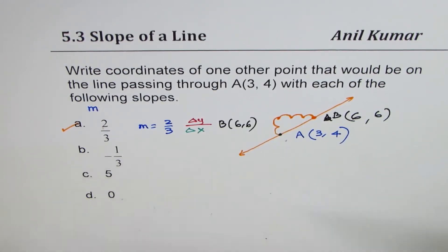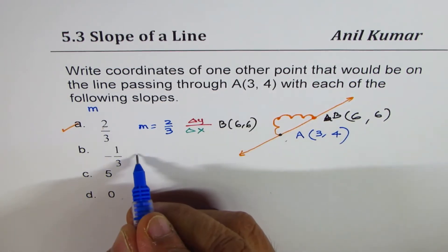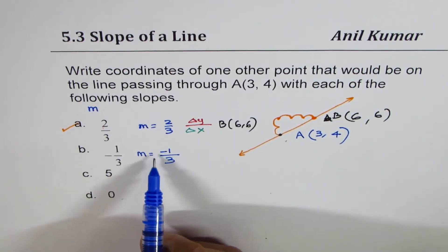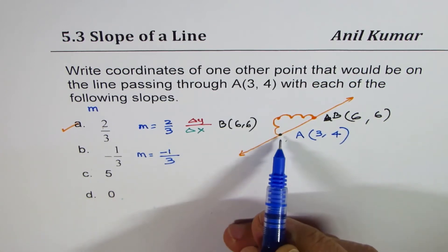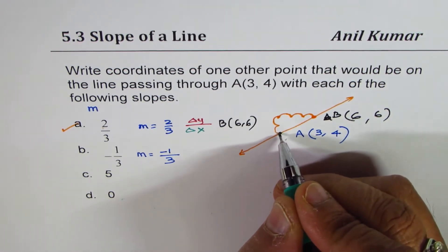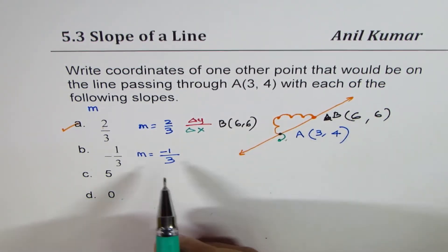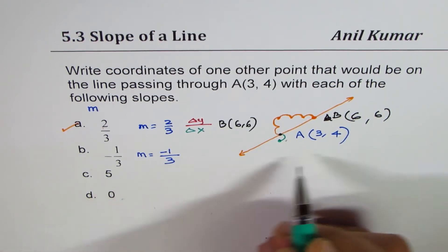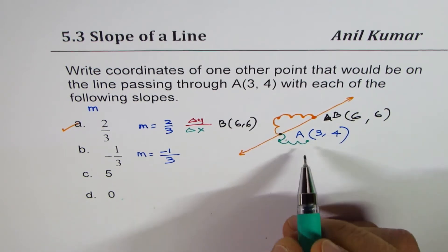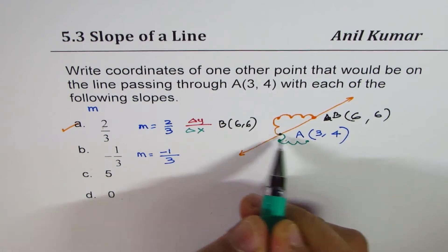Next we have a slope of -1/3. The negative sign means we go down from point A, since A is a common point for all these lines. So we go down by 1 unit and 3 units to the right: 1, 2, and 3. That becomes the second point, and joining A with this point gives us the line.